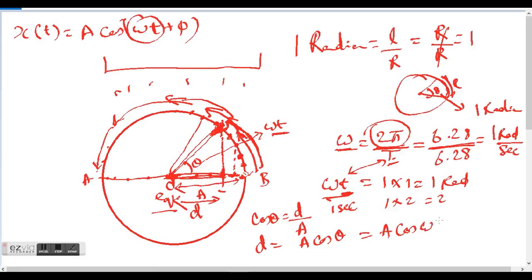We know that θ = ωt, so the displacement is A cos(ωt). We almost have the full expression. But what is φ?